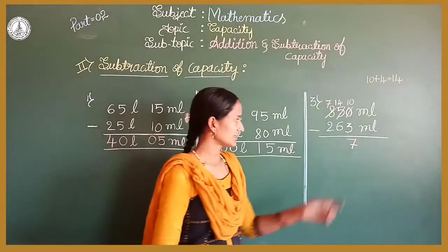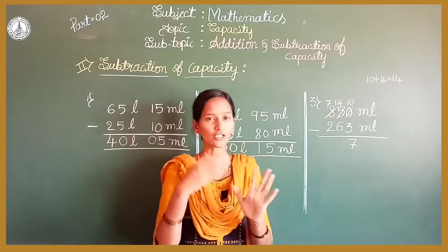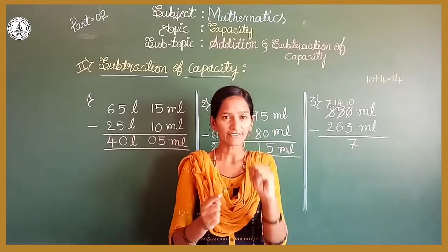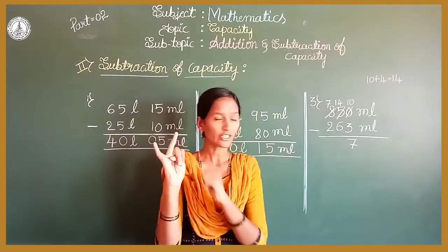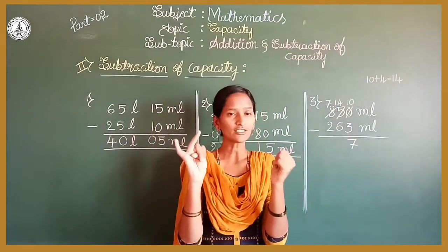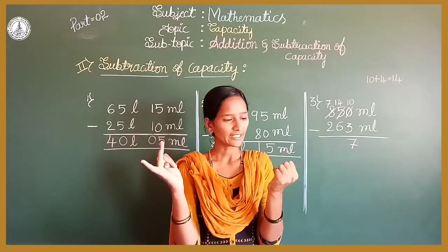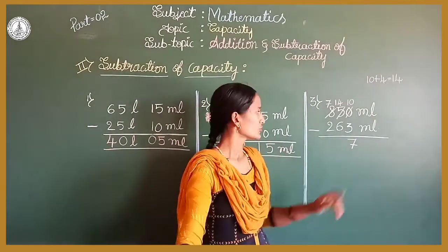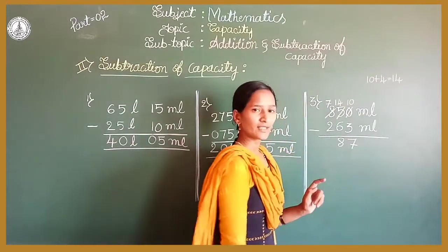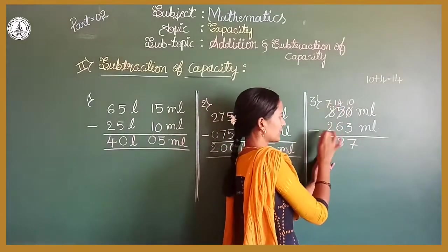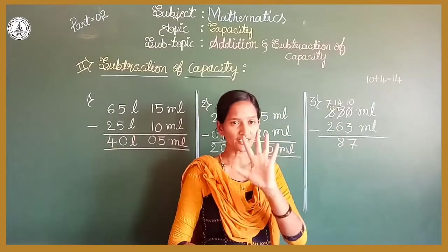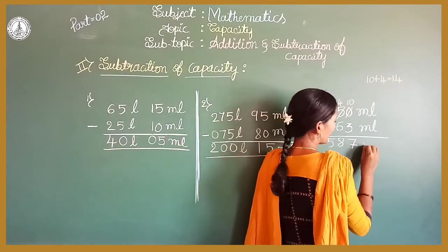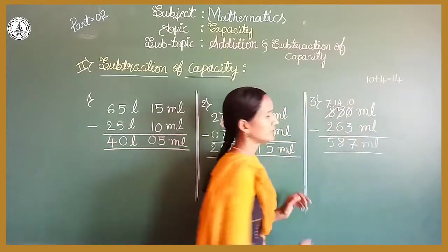Let's count from 6 up to 14: 7, 8, 9, 10, 11, 12, 13, 14 — that's 8 fingers. So 14 minus 6 is 8. Now the last column: 7 minus 2 is 5. So the answer is 587 millilitres, which is the difference of these two numbers.